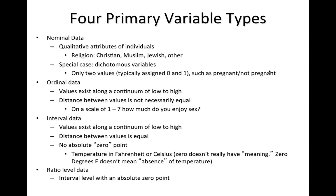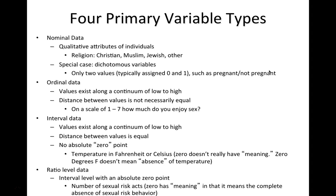Ratio level data, on the other hand, is interval level data with an absolute zero point. For example, number of sexual risk acts — zero has meaning in that it means the complete absence of sexual risk behavior. Often we talk about interval and ratio data as continuous data, and nominal data as categorical. Ordinal can go either way depending on how we're slicing it.